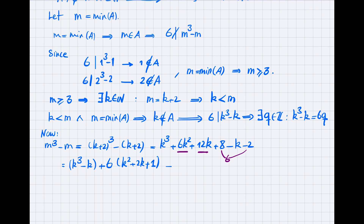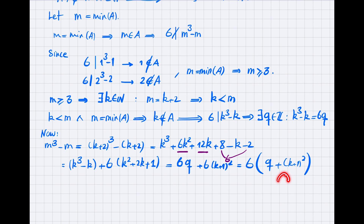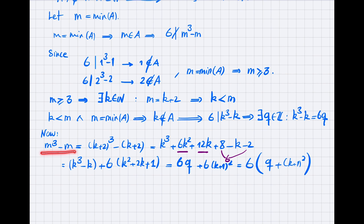So m³ − m = (k³ − k) + 6(k² + 2k + 1) = 6q + 6(k+1)² = 6(q + (k+1)²). Since q is an integer and (k+1)² is an integer, their sum is an integer. Therefore m³ − m equals 6 times an integer, which means 6 divides m³ − m.